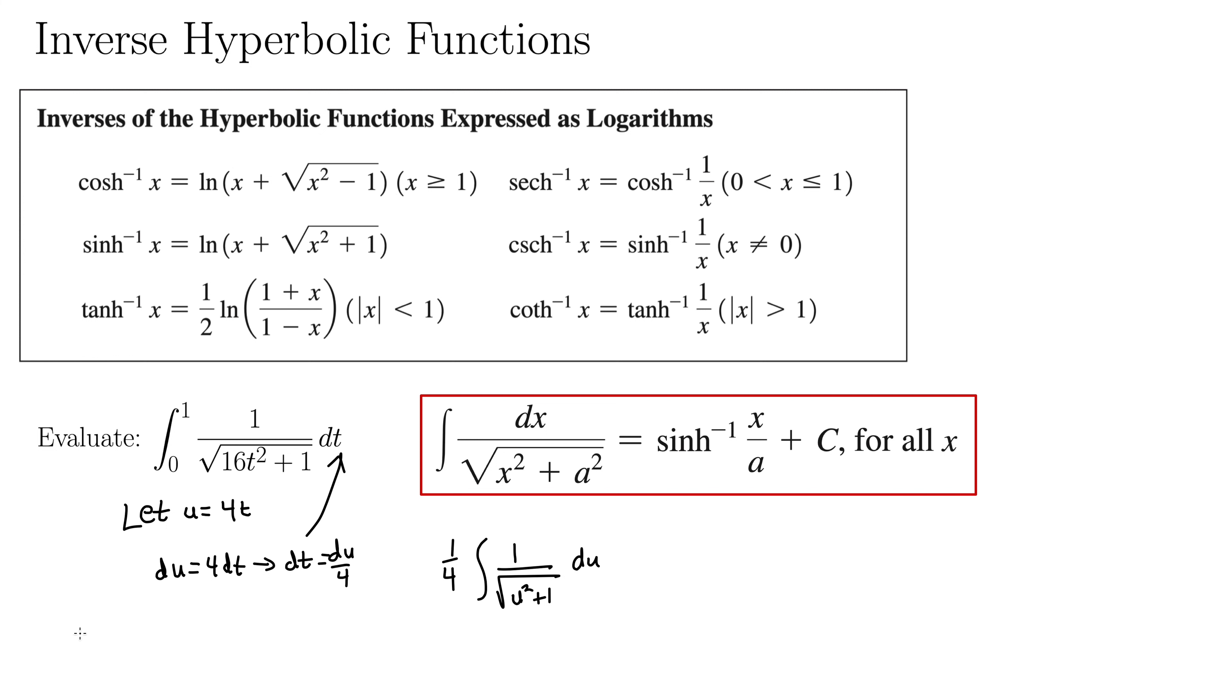So now we have the integral of 1 fourth of 1 over square root u squared plus 1 du. Ah, but let's not forget about our limits of integration here. u of 0 equals 4 times 0, which is 0. And u of 1 is 4 times 1, which is 4. So our integral now is from 0 to 4.